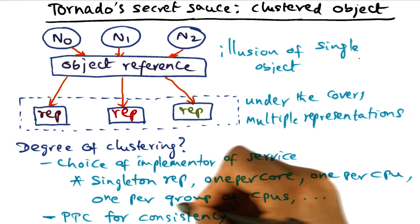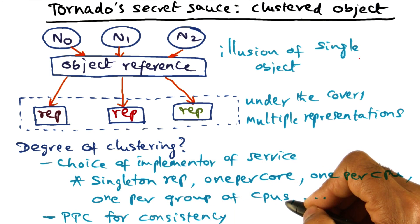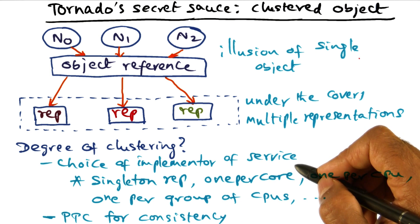Or maybe one representation of an object for a group of processors. So these are all design decisions that is left up to the implementer of the service.